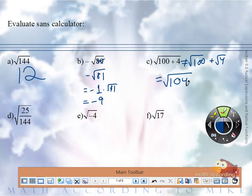How about D? What number squared gives me 25 over 144? 5 over 12.